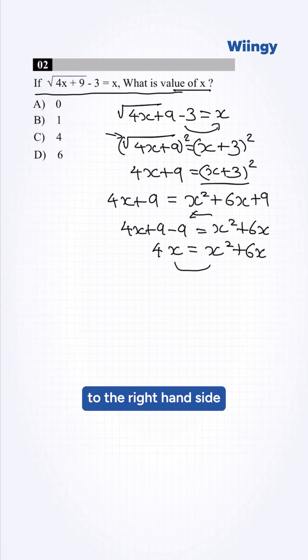We take 4x to the right-hand side, which will be equal to 0. So x² + 6x - 4x = 0. Simplifying this, it will become x² + 2x = 0.